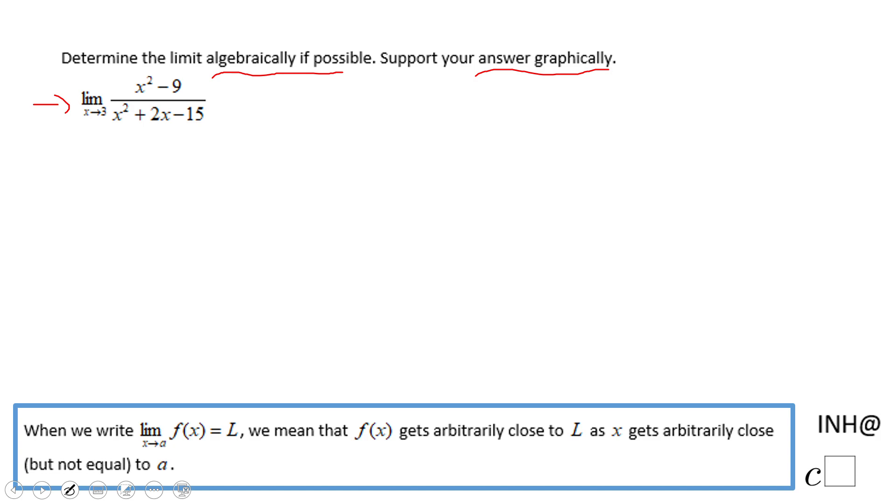First of all, when you have a limit you want to use substitution to see what you get. So wherever you see that x, replace it with 3 and try to simplify that numerical expression. If you do that in this case, you're going to end up with something we call undefined, 0 over 0.